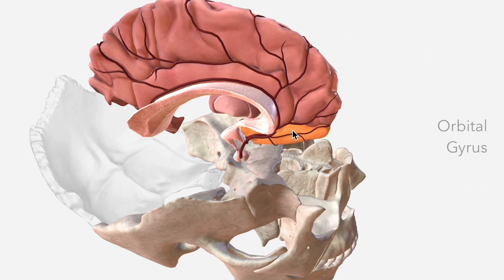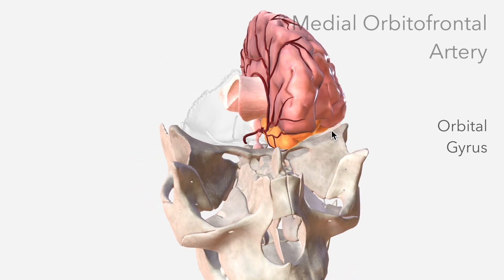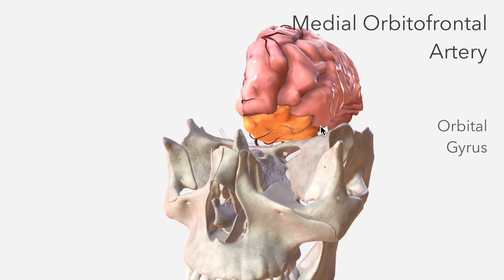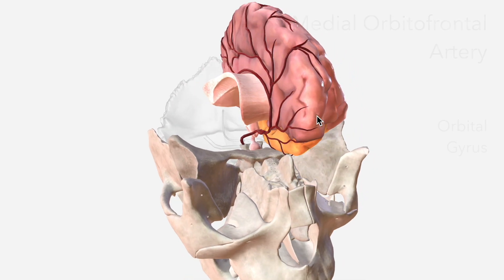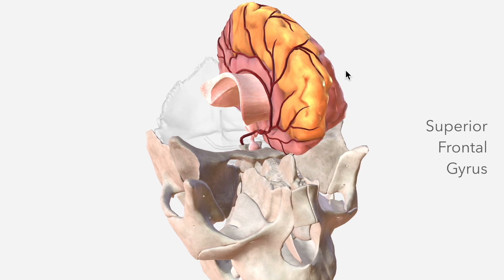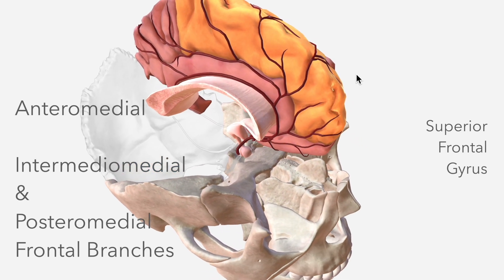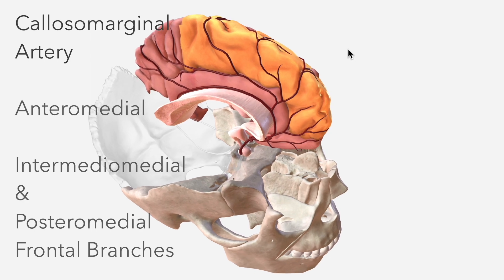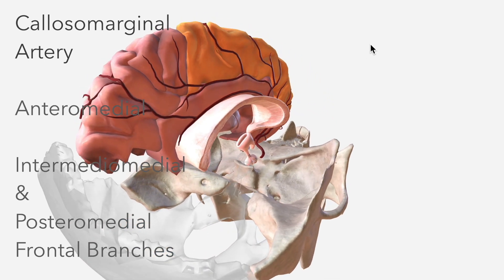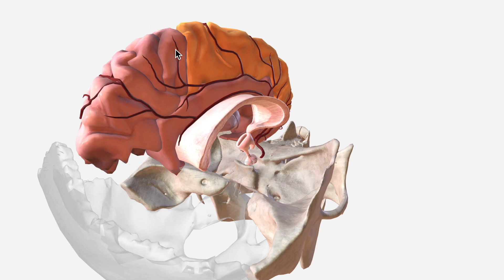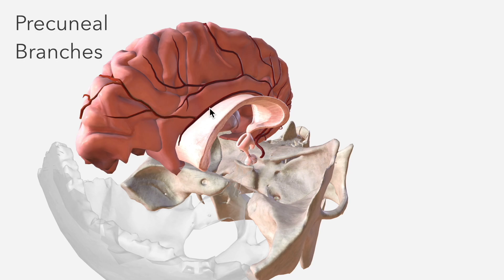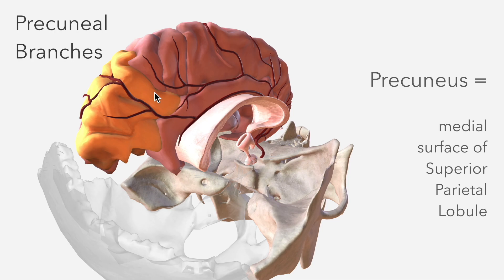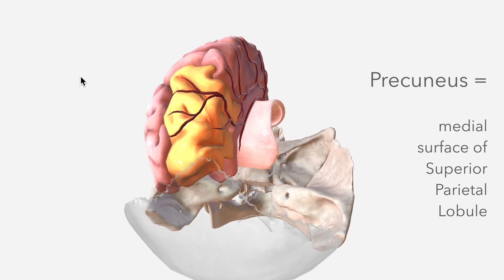This is the orbital gyrus, which was mentioned earlier — that's the medial orbitofrontal artery curling around the orbital gyrus, as well as contributing to the supply of the superior frontal gyrus, which all of these frontal branches of the callosomarginal artery clearly contribute to as well. The precuneal branches departing from A5 supply the precuneus, which is the medial surface of the superior parietal lobule.